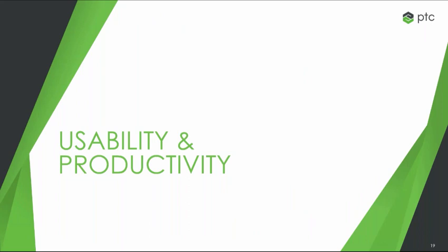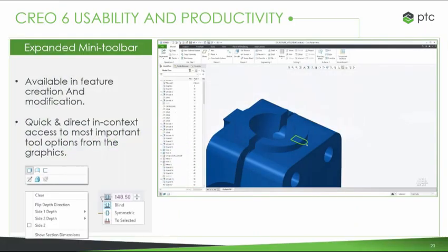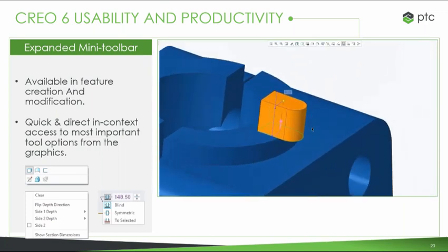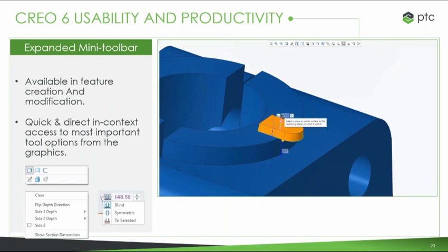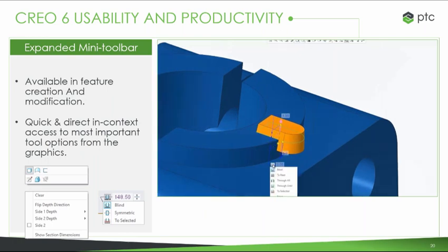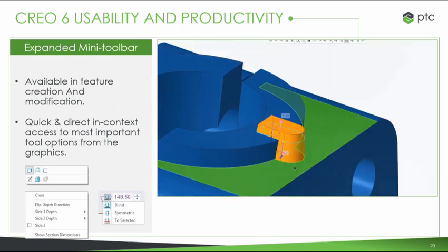Improvements in Creo 6 for productivity and usability — making it easier to do what you want with more control. Our first topic is the mini toolbar, which is now available for feature creation and modification. When you click on your model to add or change a feature, a mini toolbar pops up tied exactly to what you're doing. It's in-context access to the most important options, so you can stay right in your design world without moving your mouse around looking for buttons in your toolbar — quick access to all the most important functions for the job you're doing.